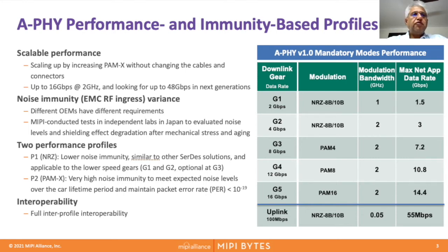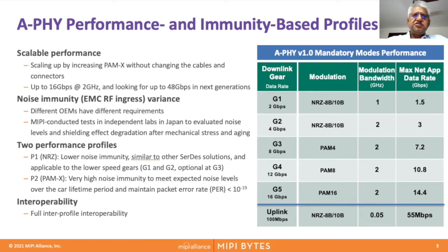There are two profiles supported in A5. Profile one is NRZ-based, offering lower noise immunity — more like a normal standard seen in the market — and it supports gear one and gear two, with an optional gear three. PAM-X is a very high noise immunity physical layer suitable for rugged and noisy environments, still achieving a very good packet error rate of 10 to the minus 19. These two profiles interoperate at gear three.